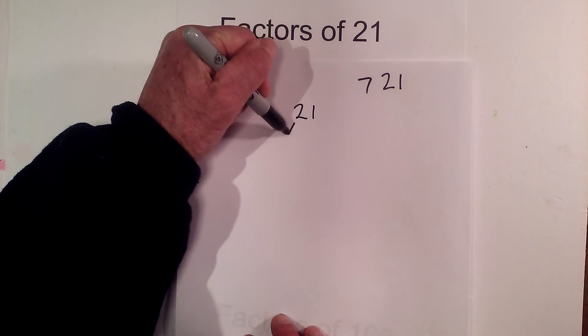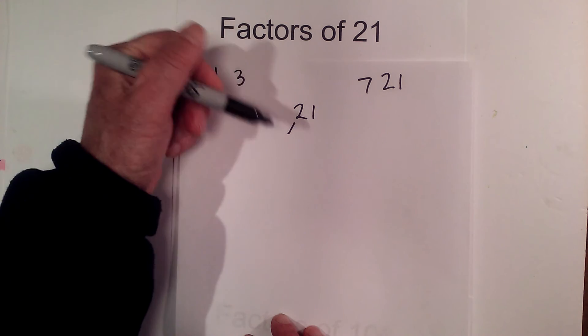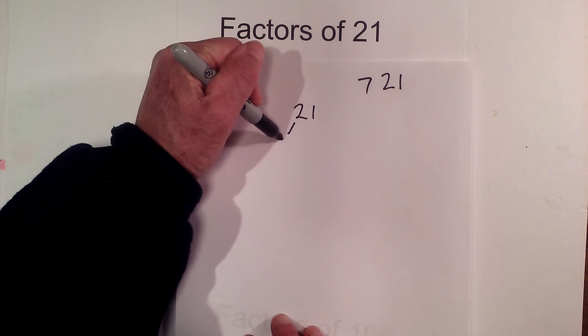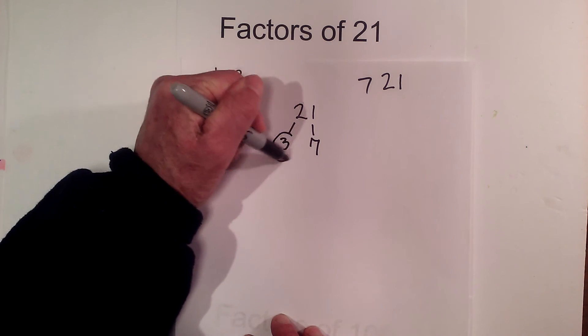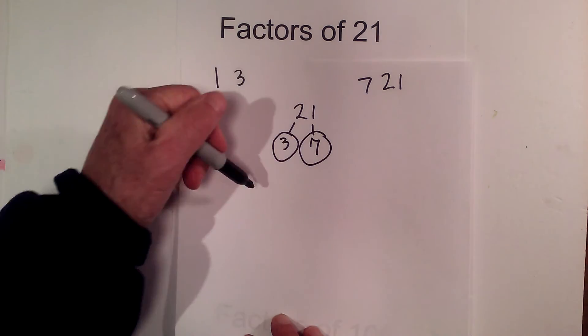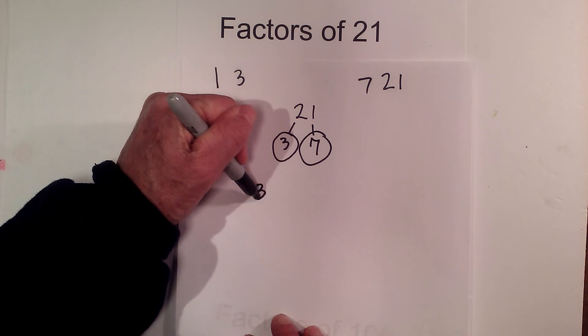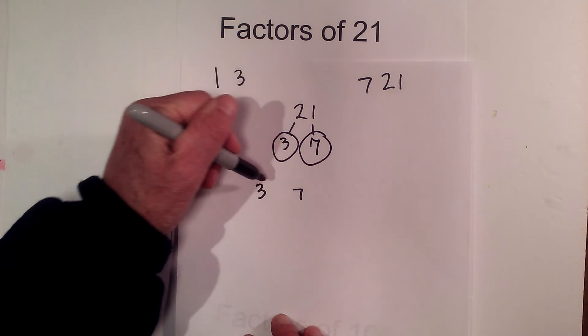Now let's complete a factor tree for all the prime factors. 3 times 7 equals 21. Circle both of these because they are prime.